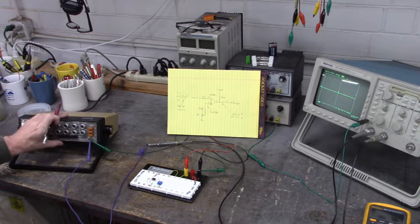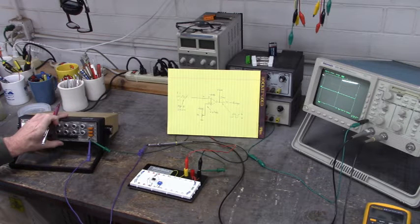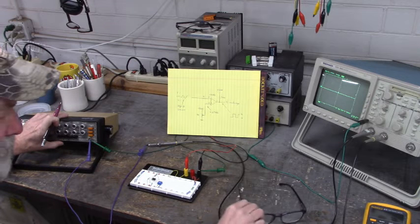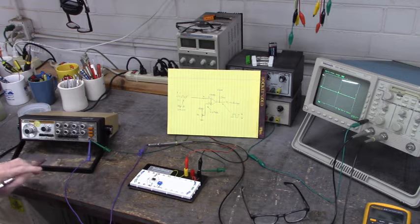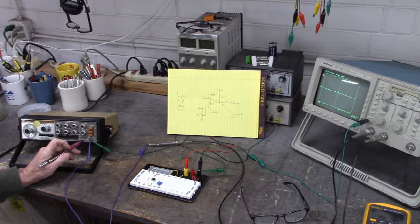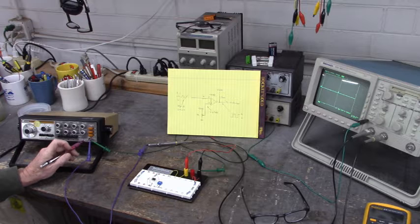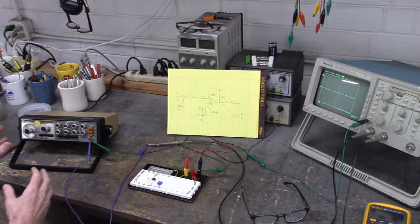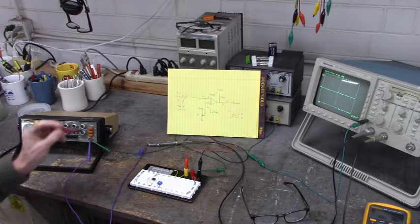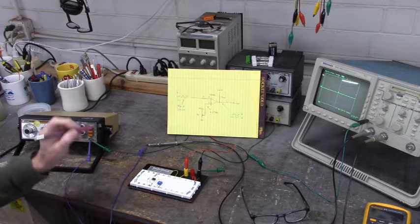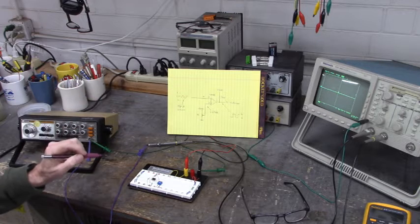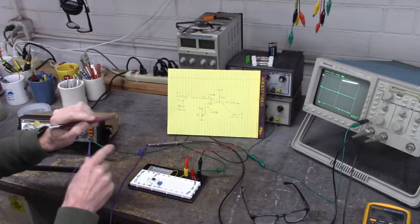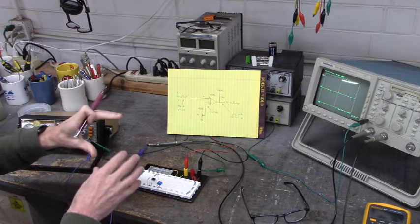Now we are going to set this function generator up to simulate a sine encoder. The sine encoder has two channels. We are just going to look at one channel because this function generator only has one output. But a sine encoder, as we saw with the HOMAG spindle motor, has two channel output - A sine and B sine. And they are 90 degrees out of phase of each other just like a quadrature encoder.